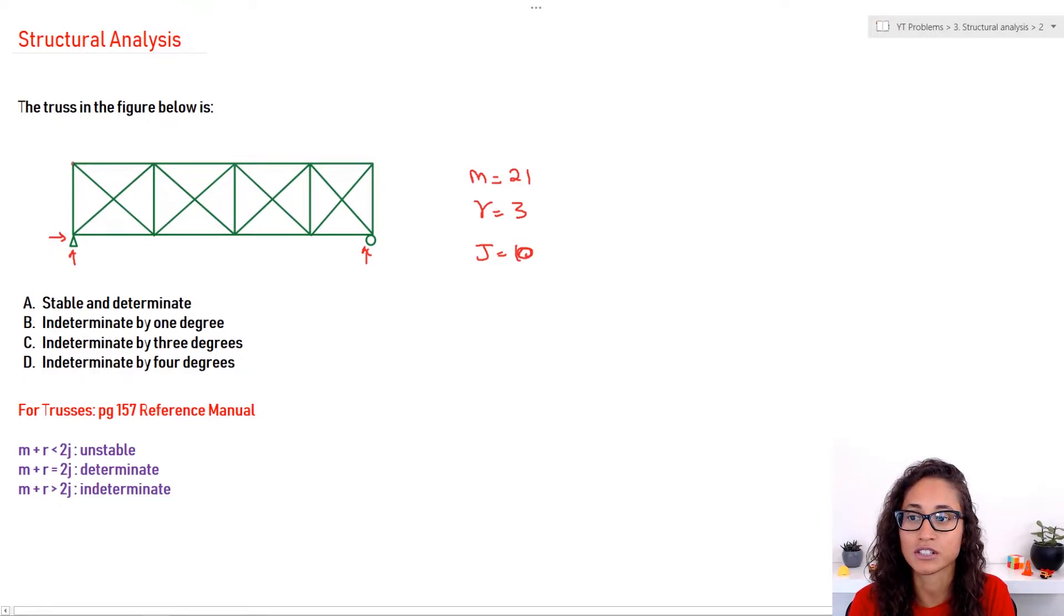And then for the joints, these would be considered a joint. This is a joint, and this is a joint. Even at the rollers and at the support, you have a joint, right? These are not considered a joint. So, you should get about 10. And for the reactions, we have 3.